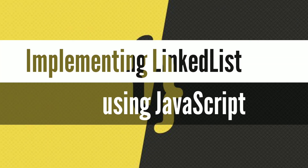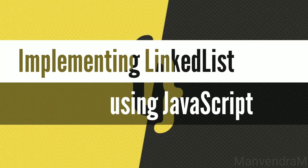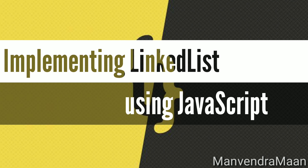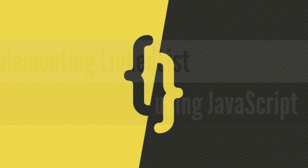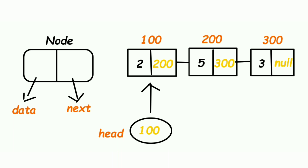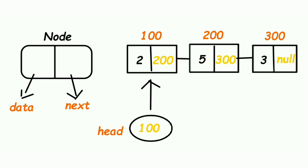Hello friends, today I will show you how to implement a linked list using JavaScript. Before looking into the implementation, let's see what a linked list is and how it looks. For a linked list, we have a collection of nodes, and for each node we have two things: first is data, and the next is the next pointer.